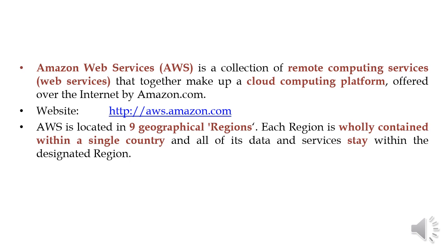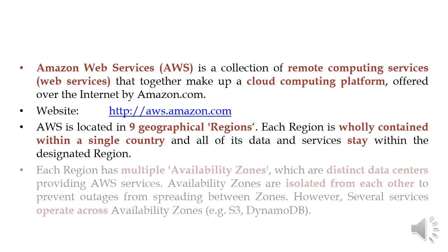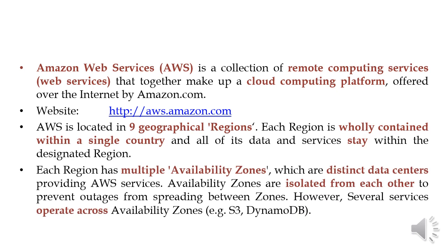Each region is wholly contained within a single country and all of its data and services stay within the designated region. Each region has multiple availability zones which are distinct data centers providing AWS services. Availability zones are isolated from each other to prevent outages from spreading between zones. Several services operate across availability zones, including S3 and DynamoDB.